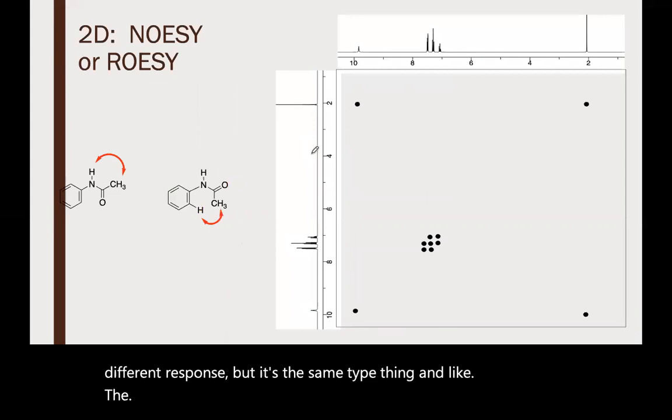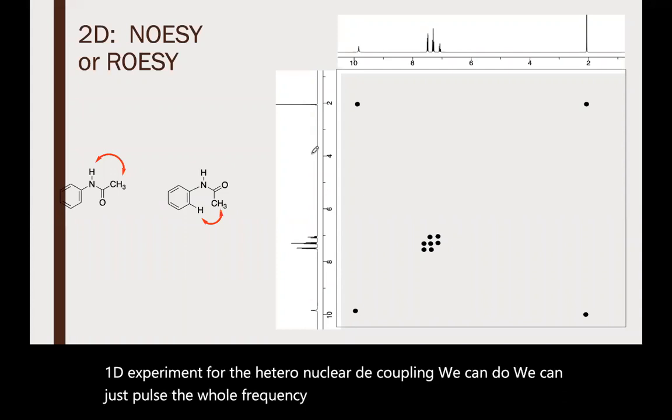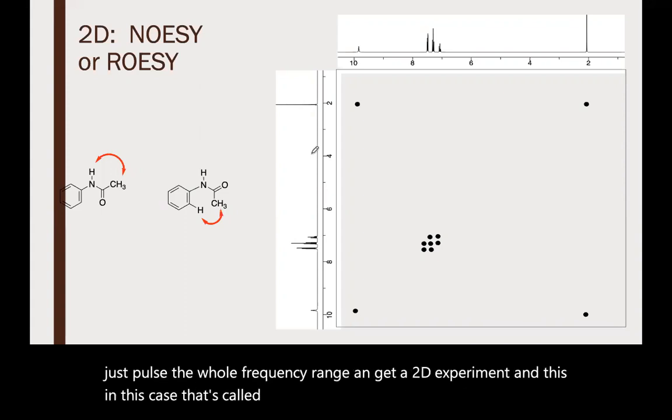For the 1D heteronuclear decoupling experiment, we could pulse the whole frequency range and get a 2D experiment. In this case, that's called NOESY or ROESY depending on how you set up the pulse sequence.